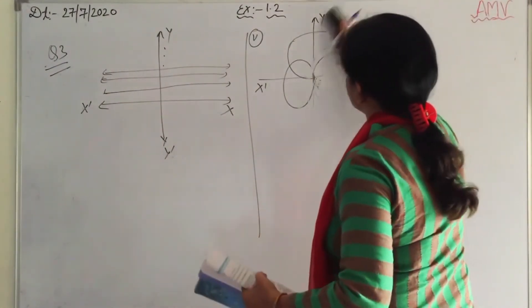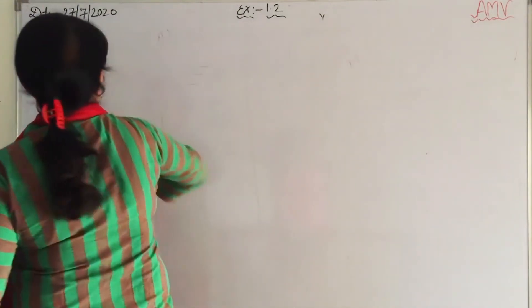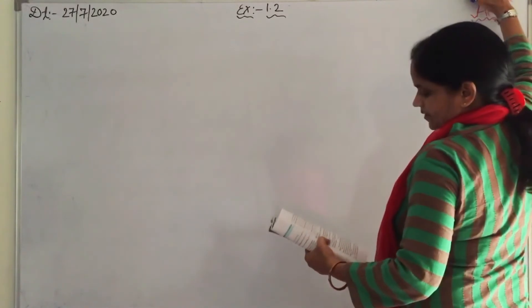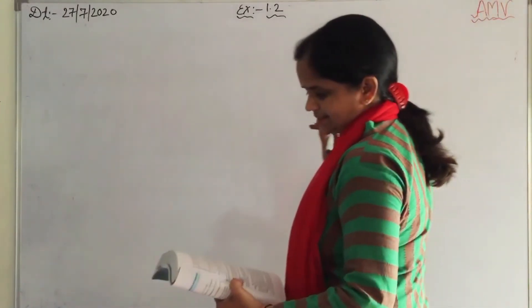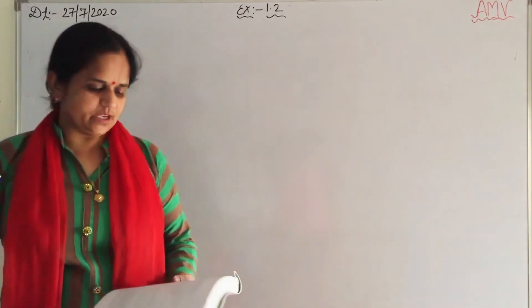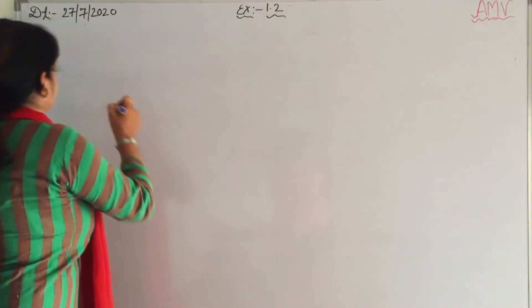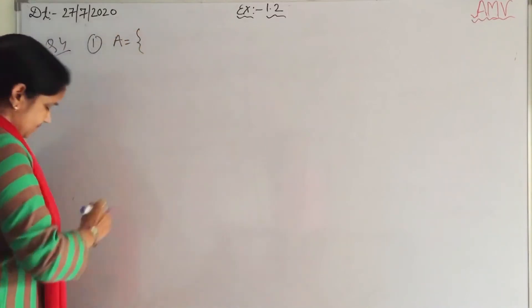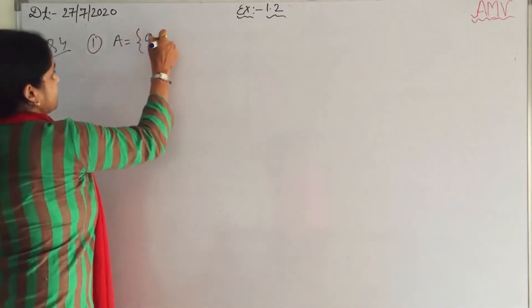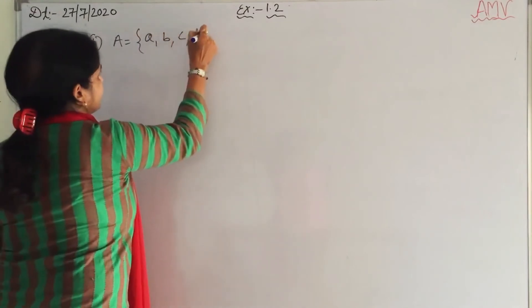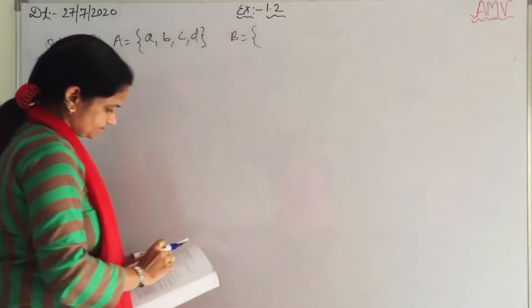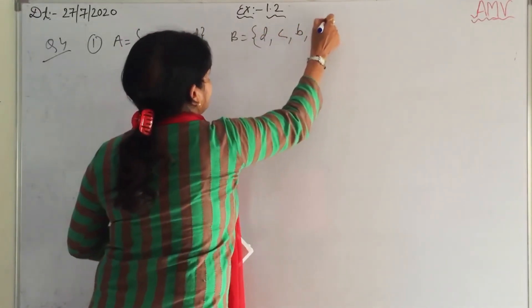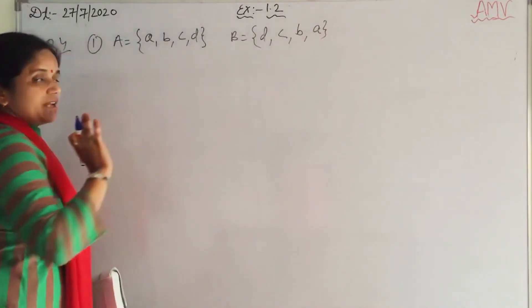Question 4: in the following sets, determine whether A is equal to B or not. First: A is given as {a, b, c, d} and B is given as {d, c, b, a}.